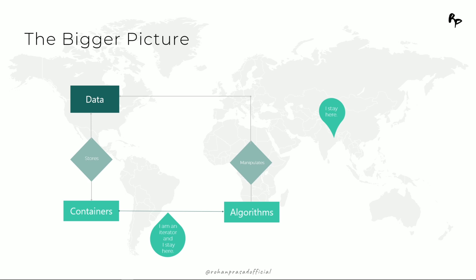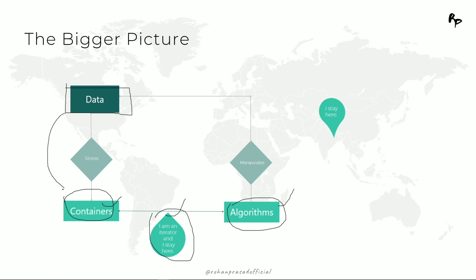Enough of the theory — let me sum it up for you. We have the data, then we have containers, then we have iterators, and we have algorithms. These three are the major components of STL. The actual data is contained by the containers and algorithms manipulate them, but they cannot do it directly, so they take the help of iterators to do that.